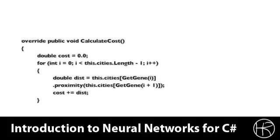Here you see the calculate cost method. This is necessary for any implementation of the genetic algorithm — it calculates the cost of a chromosome. For the cities, the chromosome is the list of cities in order that the traveling salesman will visit them. We simply move through the cities and calculate the proximity between the first city and the next, adding up the distances using a simple x-y distance formula to calculate the total cost of the chromosome, which is the total distance. This is used to sort the chromosomes to pick those that will produce the next generation.